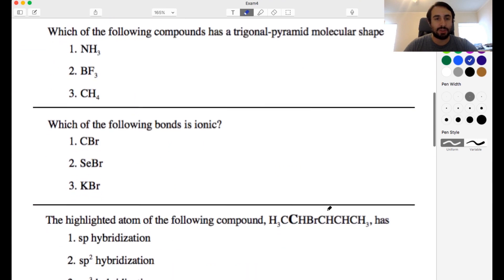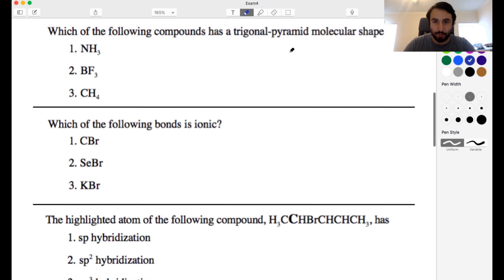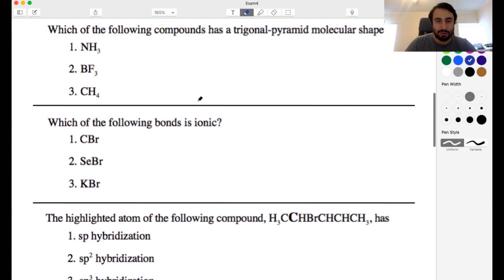Now let's do a few multiple choice. This one asks which of the following compounds has the trigonal pyramidal molecular shape and we have these three options here. So let's go ahead and draw these out. Let's draw the Lewis dot structures with accurate geometries here.